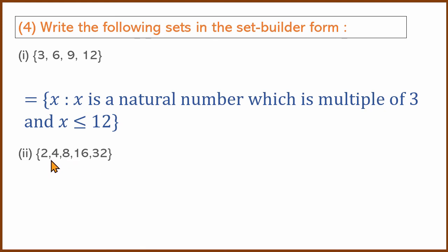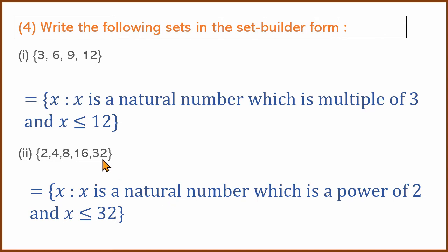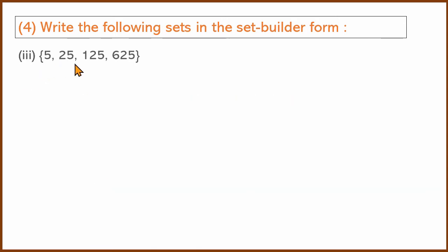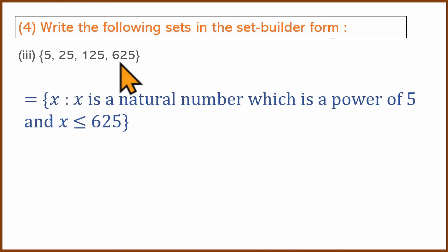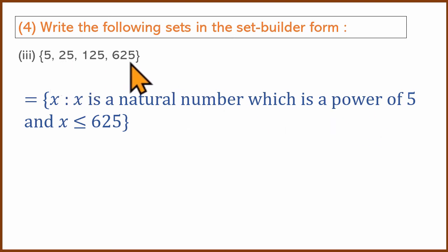Power of 2: 2¹, 2², 2³, 2⁴, 2⁵ gives 2, 4, 8, 16, 32. X is a natural number. Power of 5: 5, 25, 125, 625 — that is 5¹, 5², 5³, 5⁴. It is less than or equal to 625.